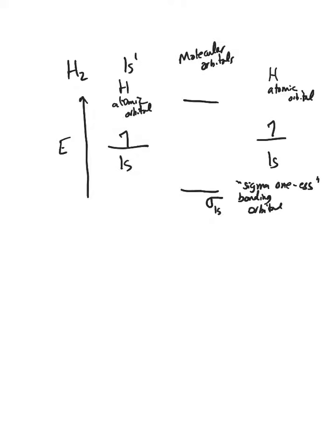At the same time, we're making an orbital of higher energy — an antibonding orbital. We're going to call that sigma 1s star, where the star represents that it's an antibonding orbital. It's of higher energy, and the electron density lies along the internuclear axis but outside the two nuclei — not in between them. So it doesn't give rise to bonding.